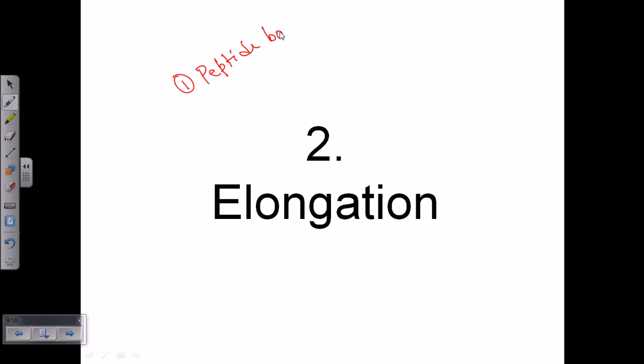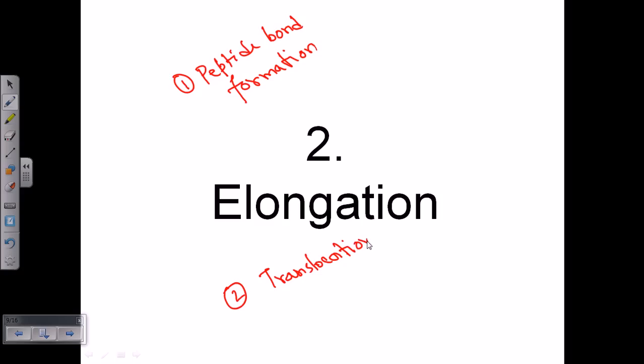The elongation phase for Eukaryotic Translation can be divided into two parts. Part one is peptide bond formation, and the second stage is translocation — translocation of the ribosomal subunit one codon, meaning three nucleotides, from five prime to three prime. These are the two different stages of Eukaryotic Translation elongation.